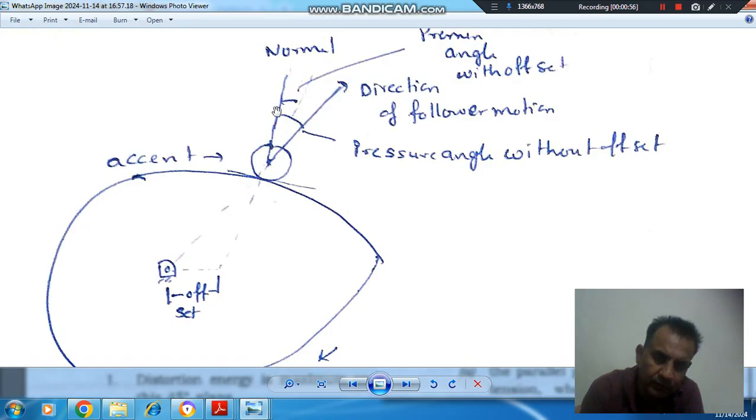The angle between the normal and the direction of movement of the follower is the pressure angle. So this is without offset.